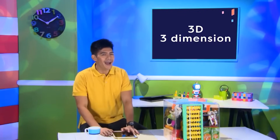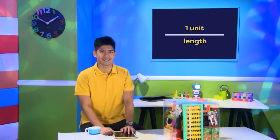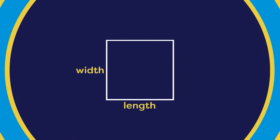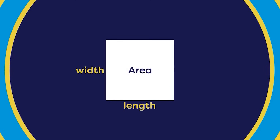Magsimula tayo sa isang line segment. Kapag sinusukat ang line segment, ang pwede lang nating sukatin ay ang length o haba nito — isang dimension lang. Ang haba ng line segment o ang length nito ay eksaktong 1 unit. Kapag naging square ang line segment, meron na itong length at width o lapad — may 2 dimensions na. Sinusukat sa square ang length at width nito para makuha ang area o ang space sa loob nito. Dahil ang length at width ng square na ito ay 1 unit, ang area ng square ay 1 square unit.